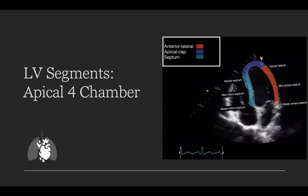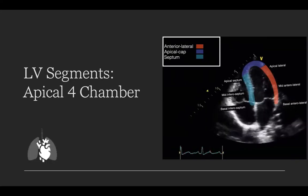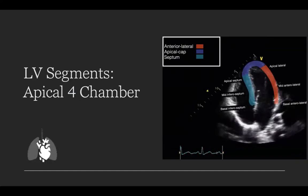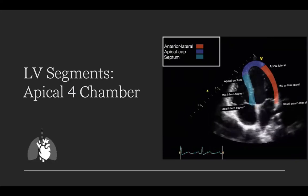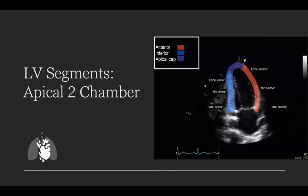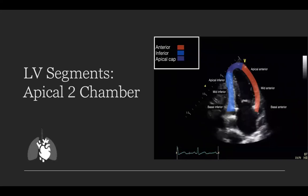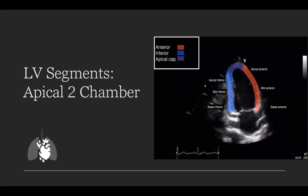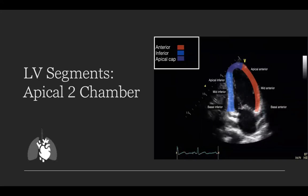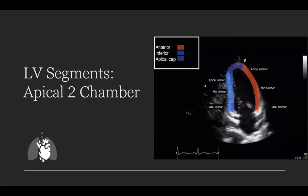In the apical four-chamber view, you can see the anterolateral wall, typically supplied by the LAD or circumflex; the apex, which is almost always supplied by the LAD; and the inferior septum, which as you move toward the basal segment is increasingly supplied by the RCA. Although the apical two-chamber isn't the most common point-of-care echo view, it is useful for visualizing both the anterior wall — typically supplied by the LAD — and the inferior wall, typically supplied by the RCA.